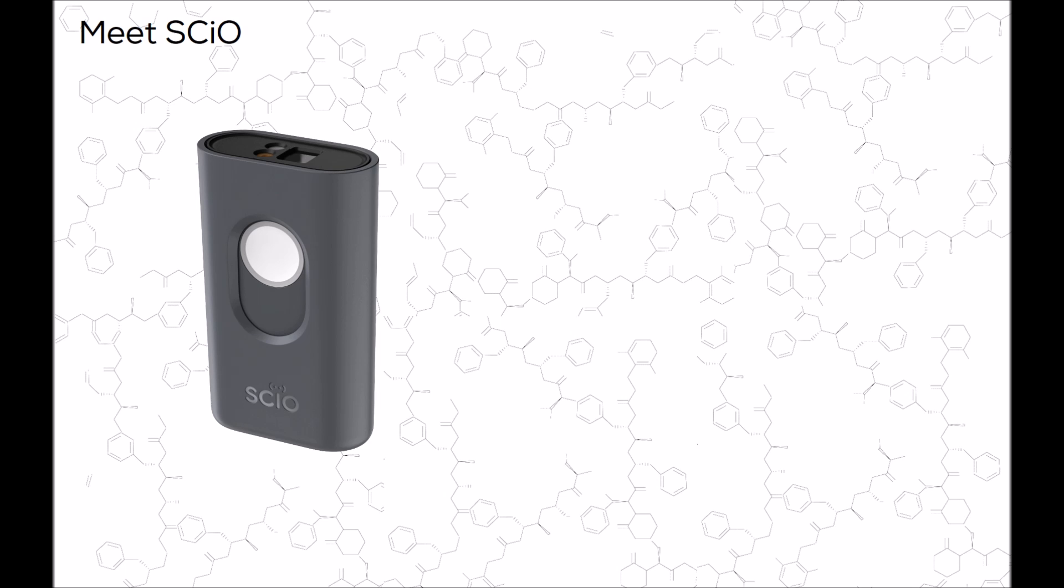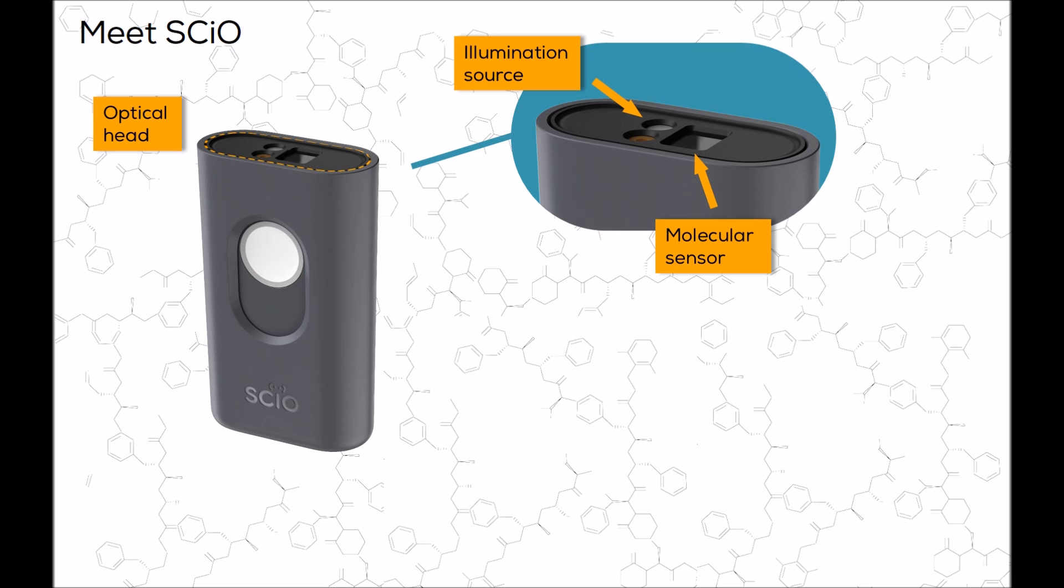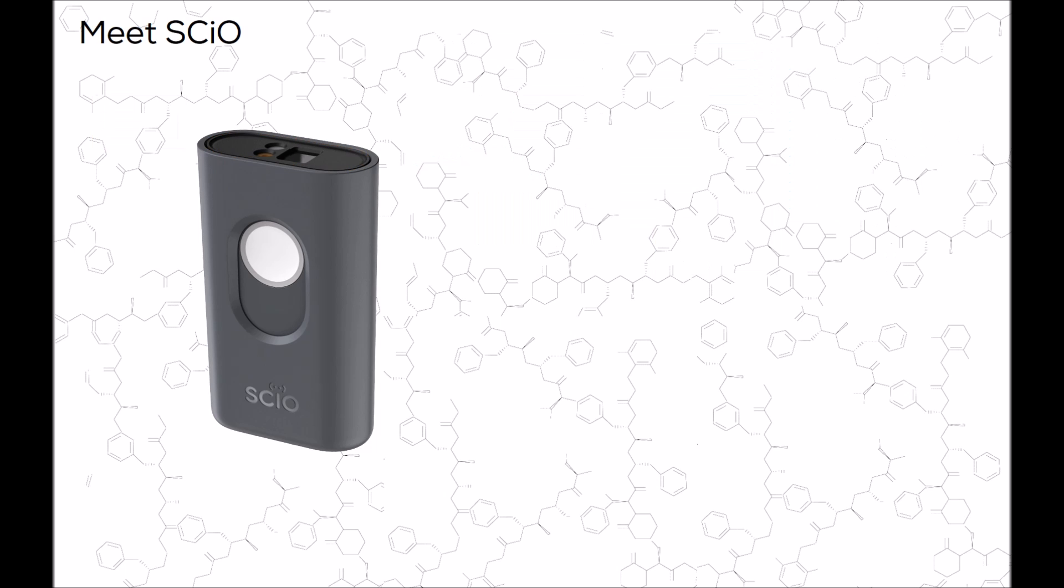On the front of SCiO is the optical head. The optical head contains the molecular sensor, illumination source, and temperature sensor. Your SCiO is built from a precise optical device, so make sure to keep it clean, dry, and scratch-free. Exposure to liquids, dust, and scratches will affect the quality of your scans.